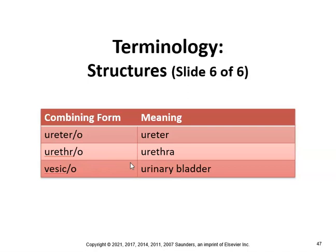Urethroplasty is surgical repair of the urethra. Vesic is another combining form for urinary bladder, so perivesical means pertaining to surrounding the bladder. Those are the combining forms for this section.